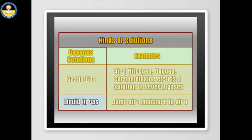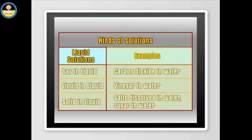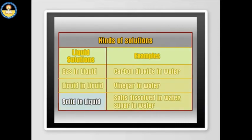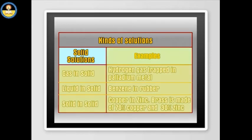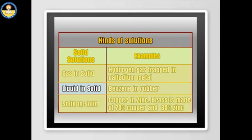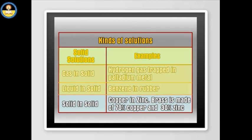Liquid in gas solutions include damp air — moisture in air. Liquid solutions include: gas in liquid such as carbon dioxide in water; liquid in liquid such as vinegar in water; and solid in liquid such as salts or sugar dissolved in water. Solid solutions include: gas in solid such as hydrogen gas trapped in palladium metal; liquid in solid such as benzene in rubber; and solid in solid such as brass, made of 70% copper and 30% zinc.